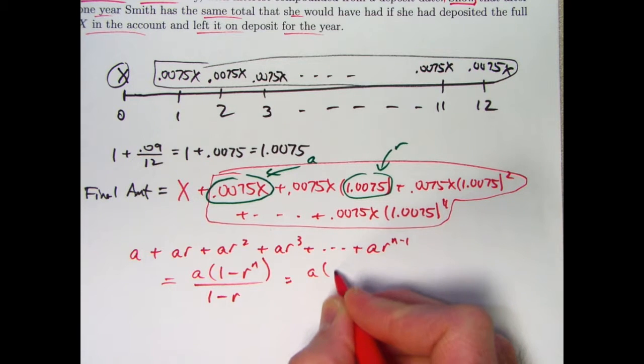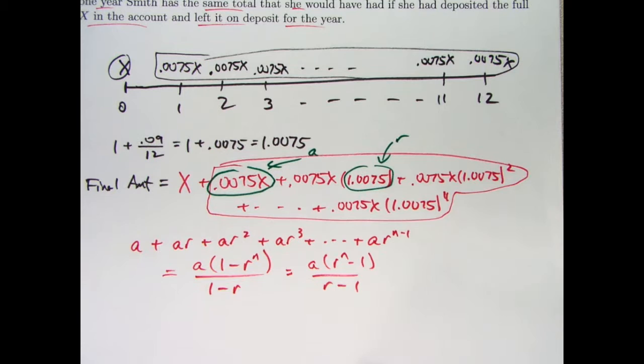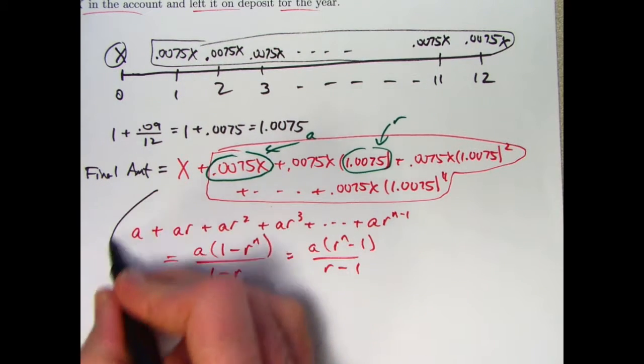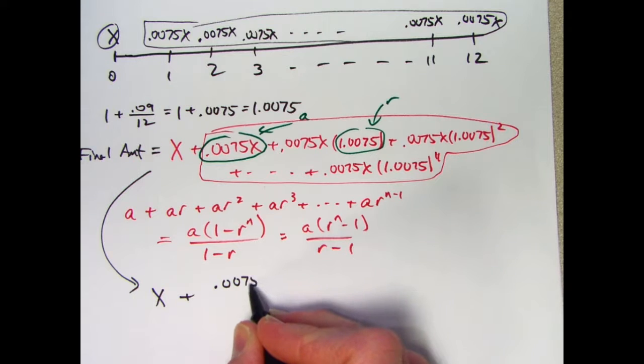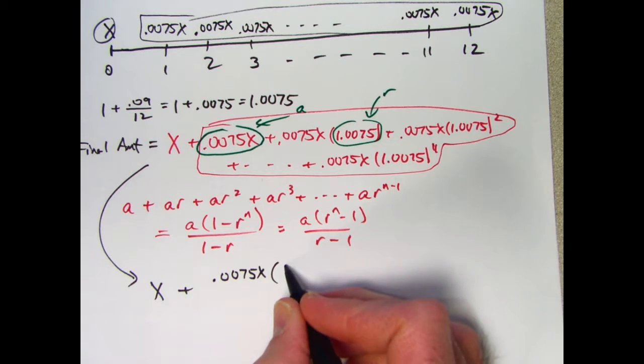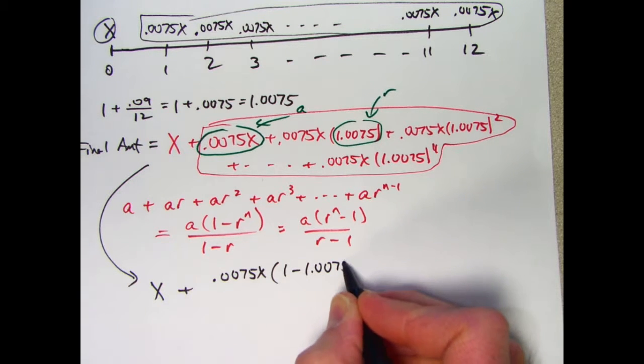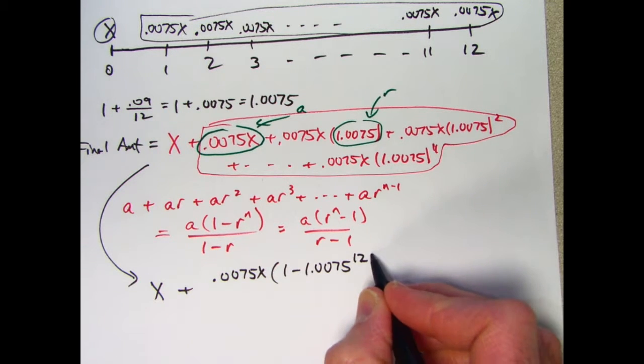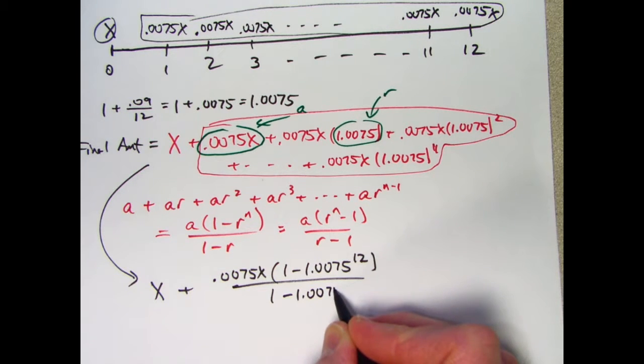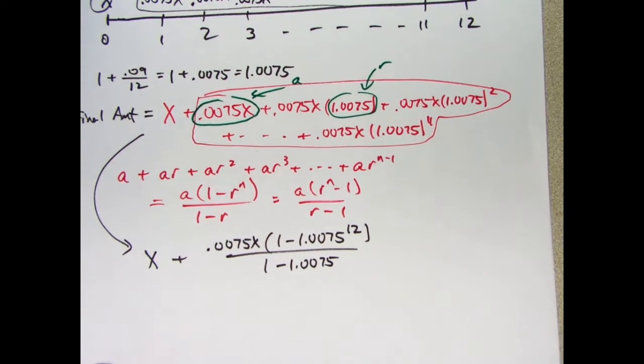Sometimes you'll also see this written like this. I'm not going to take the time to prove this. I would encourage you to do so. You can do it with induction or derive it in various kinds of ways with some algebra. You can look that up, probably on Wikipedia. Anyway, we can make use of it here now. Don't forget your initial X. Now use this formula. What is a? a is 0.0075X. r is 1.0075. What is the number of terms in the finite geometric sum? The number of terms is 12. That's the power that I raise it to.